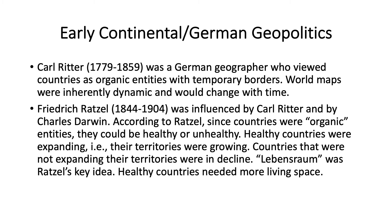Karl Ritter was a German geographer who viewed countries as organic entities with temporary borders. World maps were inherently dynamic and would change with time. Ritter represented one of the earliest attempts at conceptualizing geopolitics. Following on his work, Friedrich Ratzel, who lived between 1844 and 1904, was heavily influenced by Ritter and Charles Darwin.